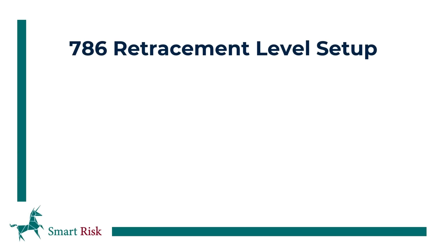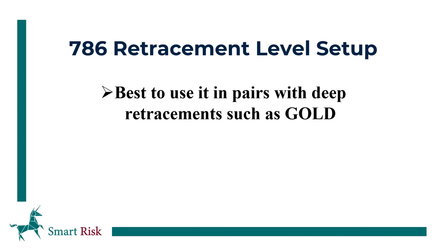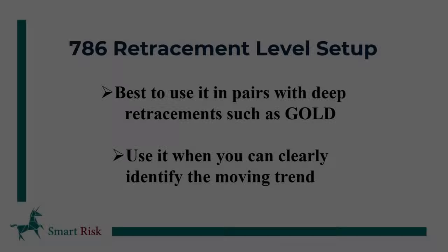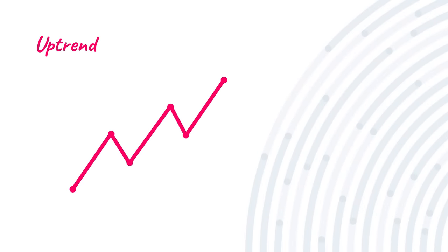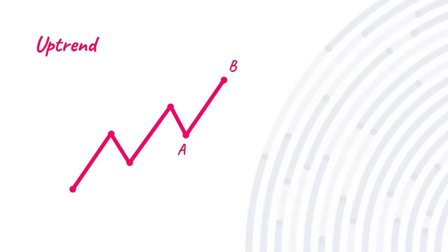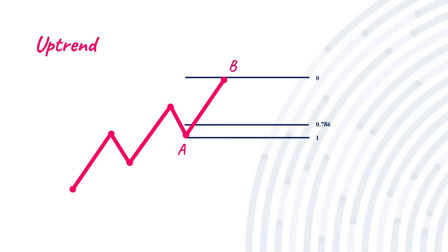This setup is based on the 78.6% Fibonacci retracement level, and it is best to use it in pairs with deep retracements such as gold. This trading strategy is a trend continuation setup, so use it when you can clearly identify the moving trend. Imagine we are in an uptrend with the market continuously making higher highs and higher lows. The recent impulsive move starts from point A and ends at point B, and we are waiting for a pullback to enter long at a better price. We will put the retracement tool from A to B and set a buying order precisely on the 78.6% level with our stop a couple of pips below A, targeting point B. This way, your risk-to-reward ratio would be almost one to three.